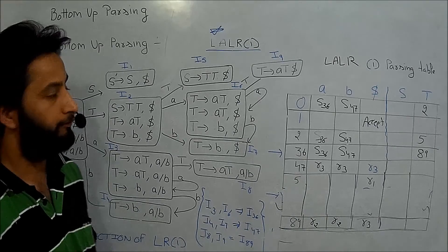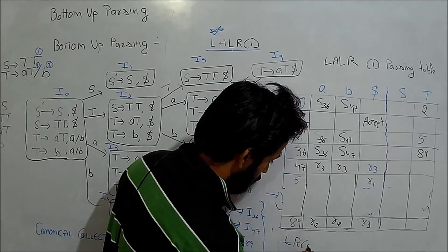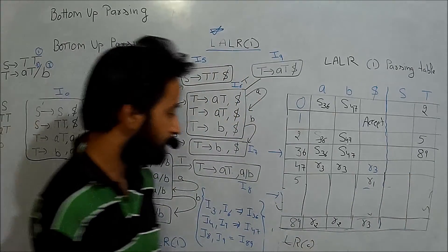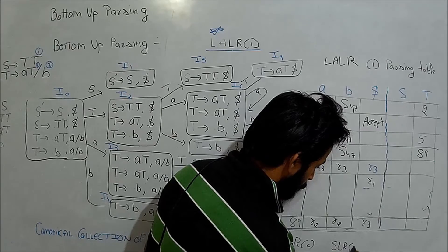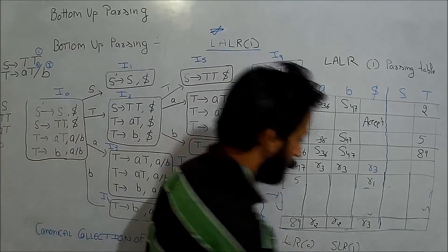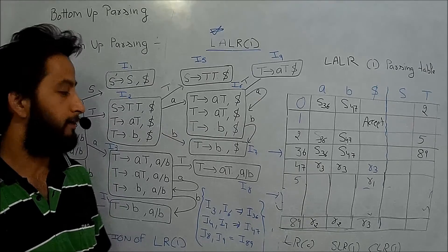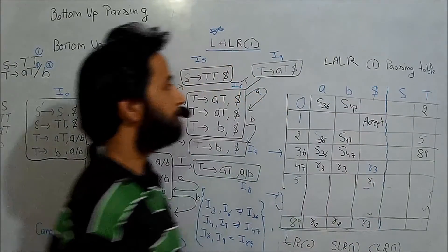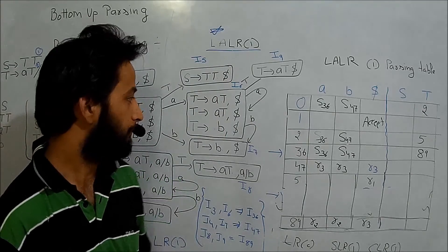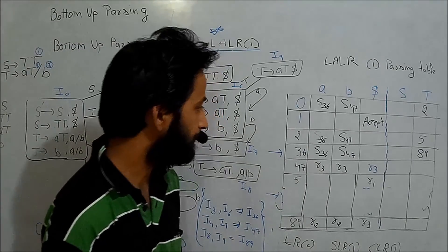To repeat the differences: in LR0, the reduce move is placed in the complete row of the parsing table. In SLR1, the reduce move is placed under the follow set of that production. In CLR1, the reduce move is placed under the lookahead symbol. For LALR1, we take the CLR1 table and apply the merge/reduction operation on similar states to produce a smaller table. Thank you.